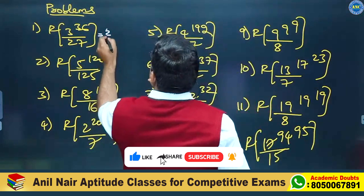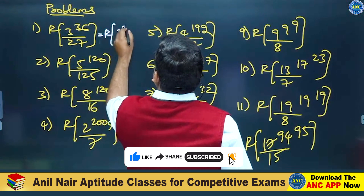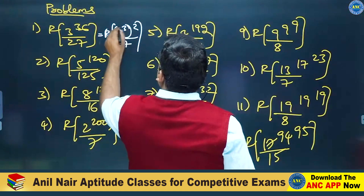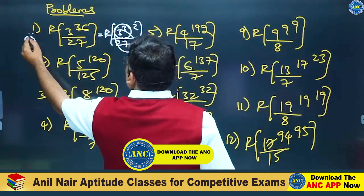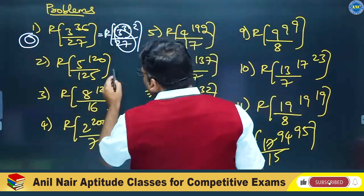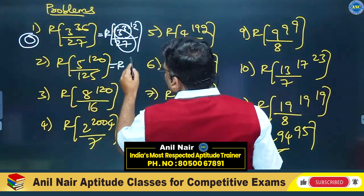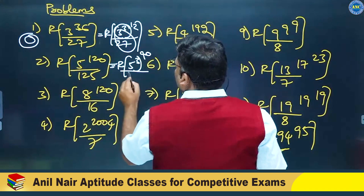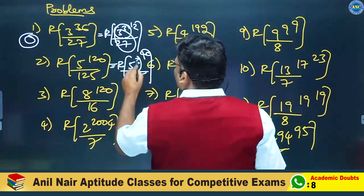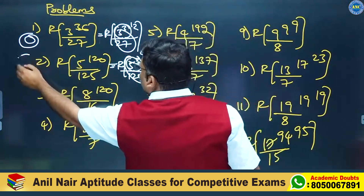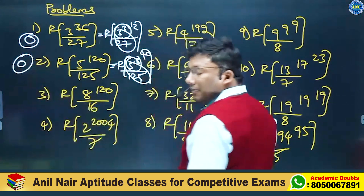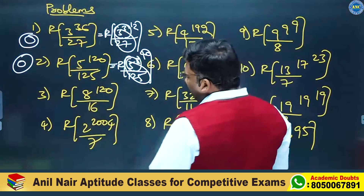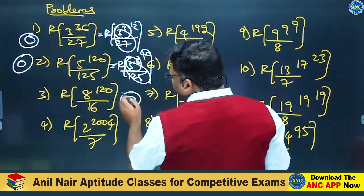3 power 3, power 12 divided by 27. 27 divided by 27 — first one answer is 0. 5 power 120: 5 power 3, power 40 divided by 125. 125 divided by 125 — second one is 0. 8 power 120 divided by 16: remainder is 0. Third one is 0.